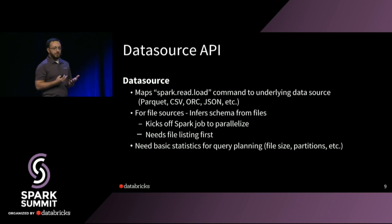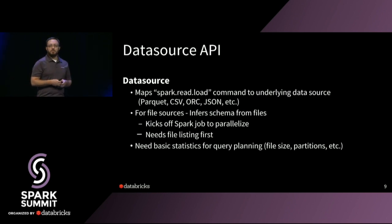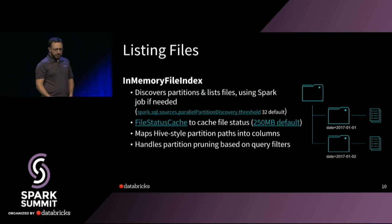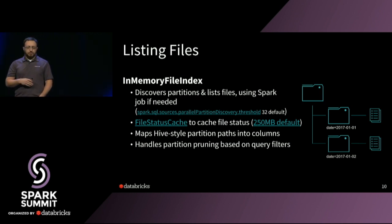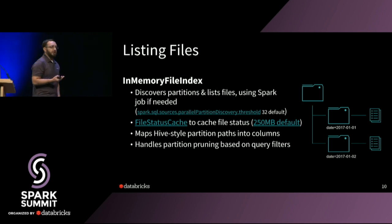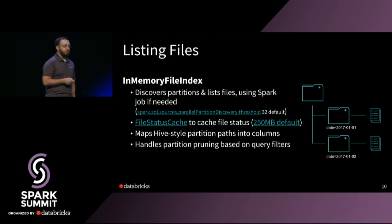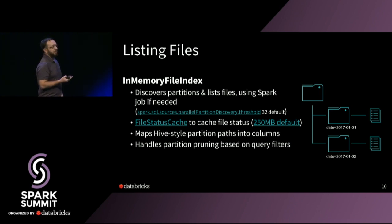Spark also wants to get basic statistics for query planning — at a minimum, it can use file size of the partitions you're loading. The data source API uses an internal class called the in-memory file index, which is responsible for doing the partition discovery. It does a file listing on S3 or HDFS, and may decide it needs to kick off a Spark job to parallelize the file listings. There's an internal setting — the default is 32 — so anything over 32 folders will kick off a job to parallelize for best performance. This is especially true if you're using S3 or other cloud storage, where file listings tend to be slower.